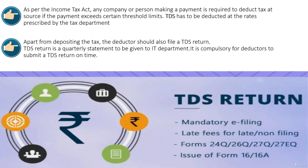TDS has to be deducted at the rate prescribed by the income tax department, and the chart shows the prescribed nature of payment that a person is making. Apart from depositing the tax, the deductor of TDS should also file a TDS return. The TDS return is furnished quarterly, presented as a statement to the income tax department. It is mandatory for deductors to submit TDS returns on time; otherwise, the government imposes late fees or non-filing fees on that deductor.